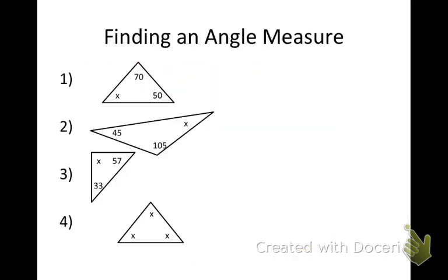Number one here. I have X, 70, and 50. Inside of a triangle adds up to what, Spencer? 180. So Spencer, if I want to find X here, what would I add up and subtract from 180? I take 70 plus 50, which is 120. So I'd say 180 minus 120, and X comes out to be 60 degrees.